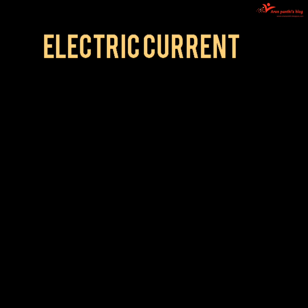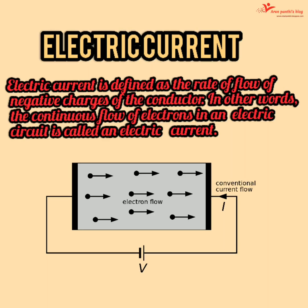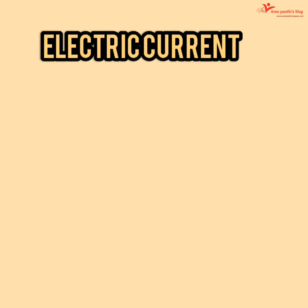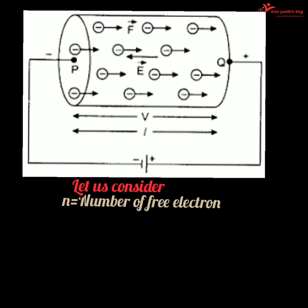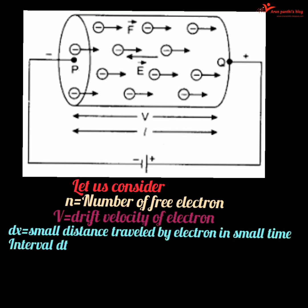Electric current is defined as the rate of net motion of electric charge across a cross-sectional area in a definite direction. Let N be the number of free electrons, V be the drift velocity of electrons, and dx be the small distance traveled by an electron in a small time interval dt.